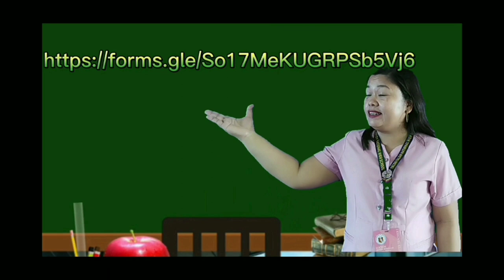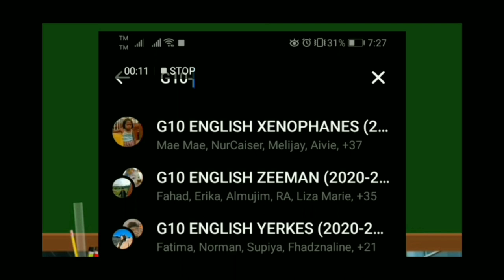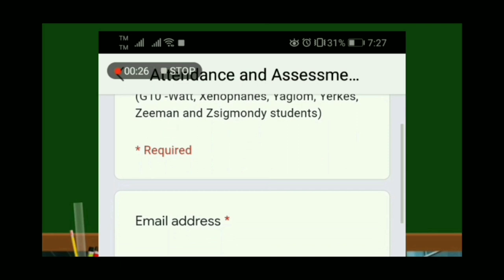Let's have an attendance check. For your attendance, follow this link, type your name and section and the date and time when you watch this video. I sent the link in your Facebook group chat. So all you need to do is to go to Facebook Messenger, type G10 English and your section 2021. Look for the link, click it and there it will lead you to Google Form with the title, attendance and assessment sheets.